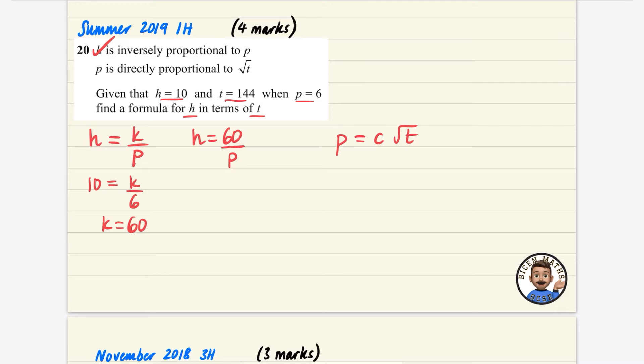So I'm going to do the same process. I'm now going to just say that when P is equal to 6, T is equal to 144. So that's C and the square root of 144.